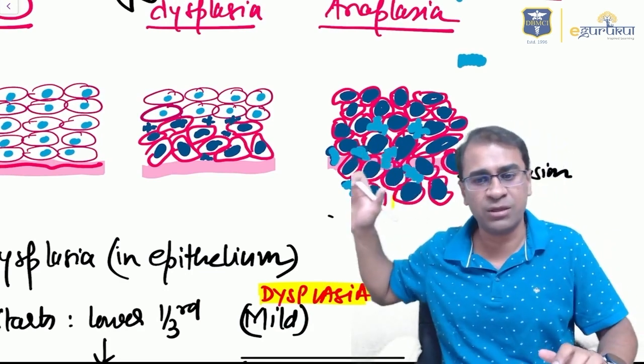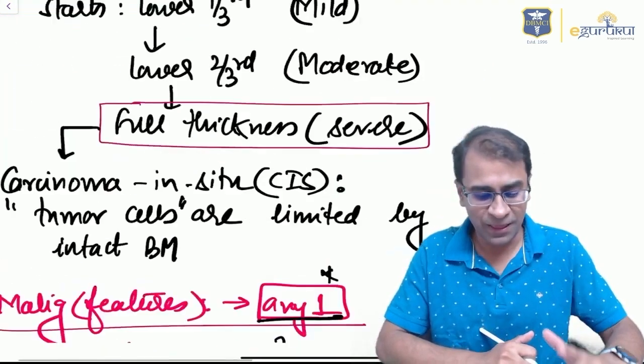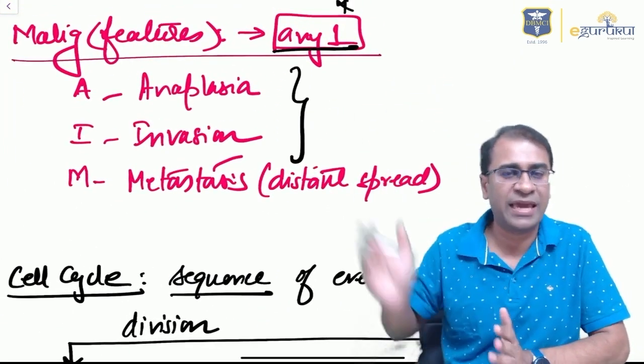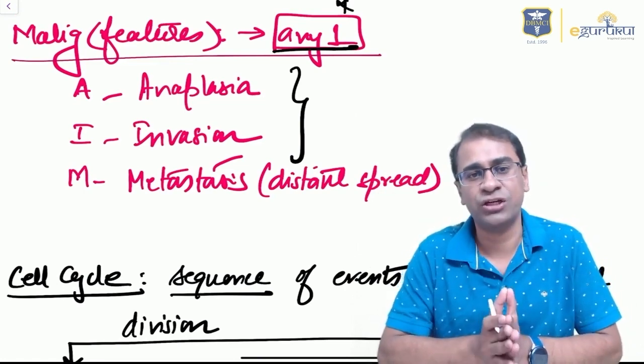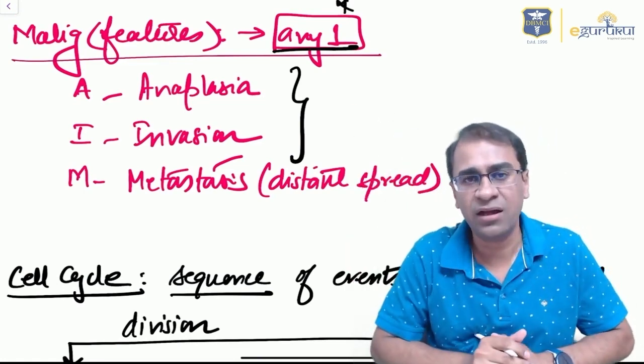Notice there is hyperchromatism, pleomorphism, high N:C ratio, and all findings you can expect in any tumor. What are the features of malignancy? A simple mnemonic: AIM. Any one of them is sufficient to call it malignant. It can be anaplasia, invasion, or metastasis.